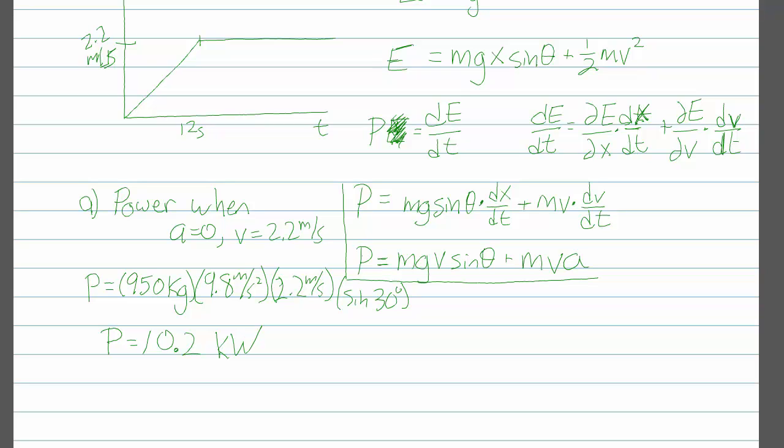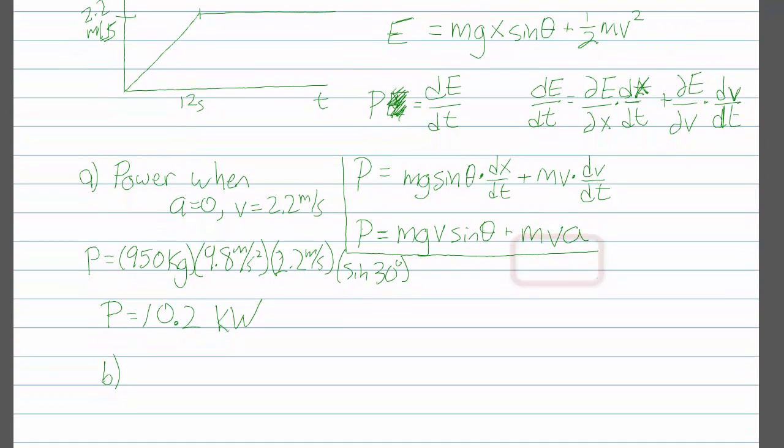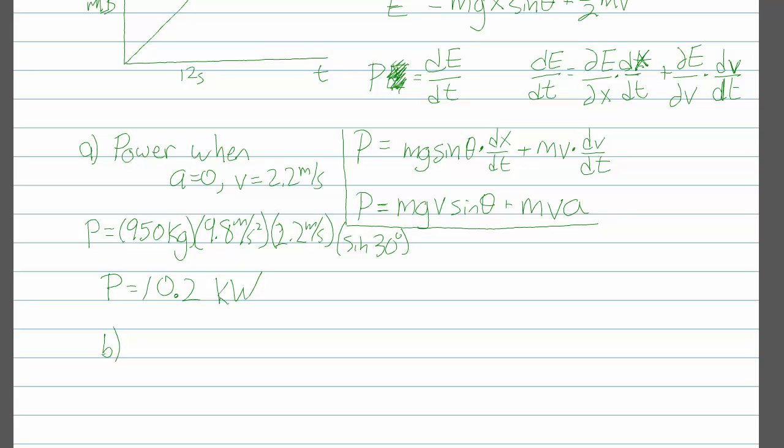Part B then asks us to find the maximum power the winch has to provide. And the maximum power is going to occur when the second term in our power equation, mva, is not zero, when the car is accelerating.